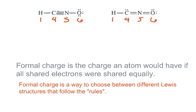So hydrogen normally has one, it has one in this structure, so that gives it a formal charge of zero. Carbon normally has four, it has one, two, three, four in this structure, so it's got a formal charge of zero.